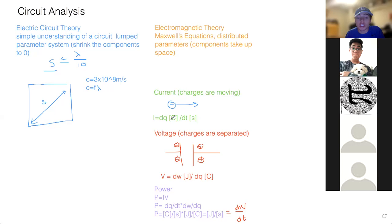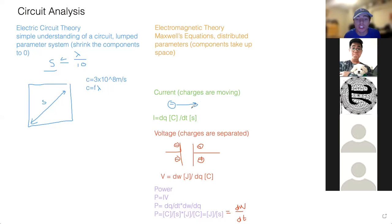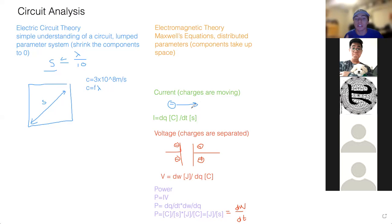Think of current as how many electrons are moving through a certain section area. Voltage is the amount of work per unit charge — think of the capacitor with charges separated. Power is the amount of work per unit time, representing how much work is actually being utilized.